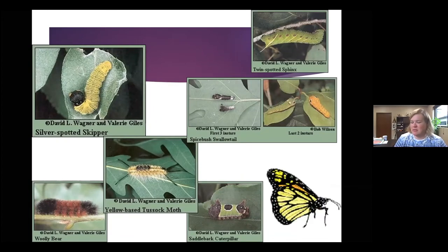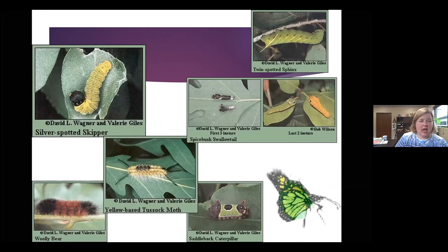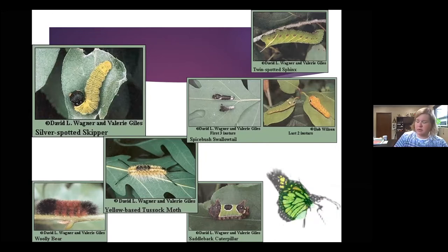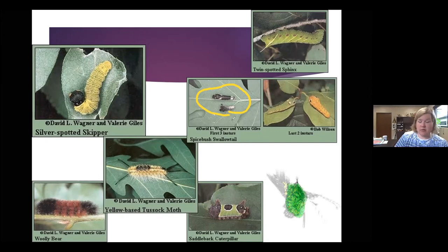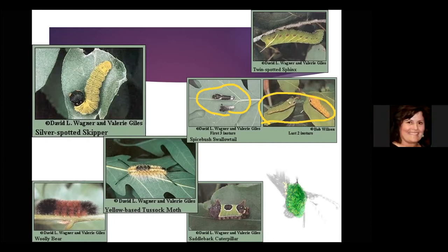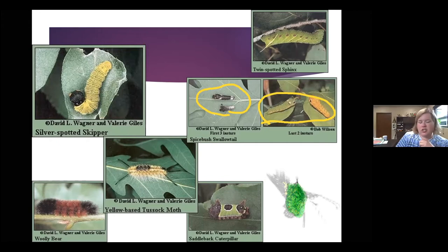Here are some different styles of caterpillars. This is a spotted skipper caterpillar — fairly large, one of the later instars. As they hatch, eat, and grow, they shed their skin; each time they do that, it's called an instar. Some have two, three, or four instars. The Spicebush Swallowtail goes from looking like a piece of bird poop — a mimic to avoid predators — and then becomes a beautiful caterpillar with eye spots on the back to scare away birds, frogs, and things that would eat a juicy caterpillar.